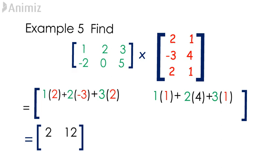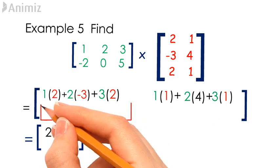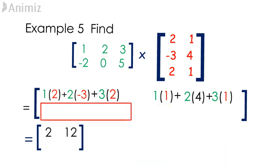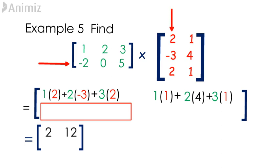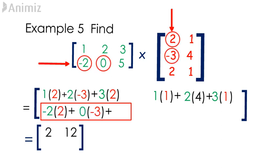To find the (2,1) element of the resulting matrix, add the multiplication outcome of elements from the second row of the first matrix to the elements from the first column of the second matrix. Negative 2 times 2 plus 0 times negative 3 plus 5 times 2 gives us 6, which is the (2,1) element of the resulting matrix.